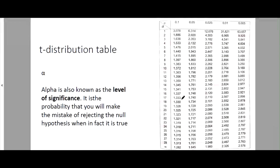We have the T-distribution table. On the left column, we have the degrees of freedom (df), and on the upper row, we have the alpha values: 0.1, 0.05, 0.025, 0.01, and 0.005. Alpha is also known as the level of significance — it is the probability that you will make the mistake of rejecting the null hypothesis when it is actually true. We will discuss this more during hypothesis testing. For now, I'll teach you how to find T-values using this table.